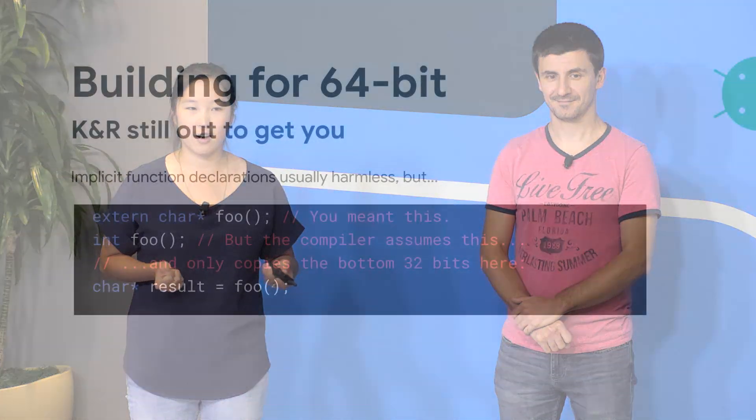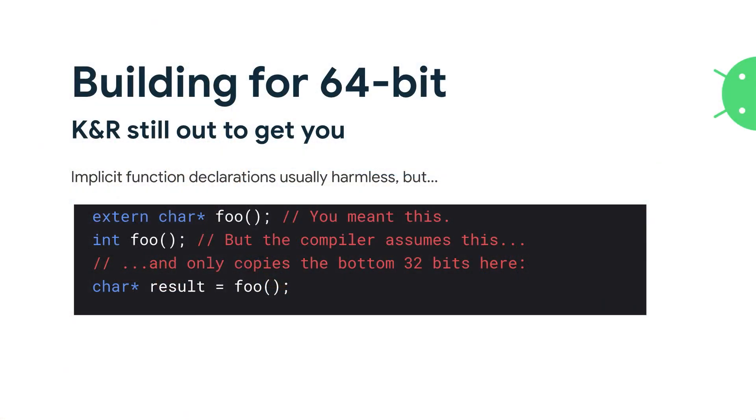Another gotcha is around implicit function declarations. These are usually harmless, but basically if you're not actually declaring what the function should be — the type — it will essentially assume int and then drop those extra 32-bits. You can find this class of error with this handy compiler flag. All of this is uploaded onto developer.android.com — we have a full page on 64-bit, so you can copy and paste these flags in.